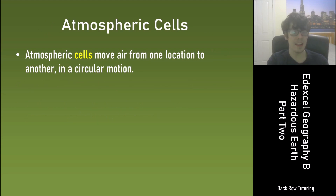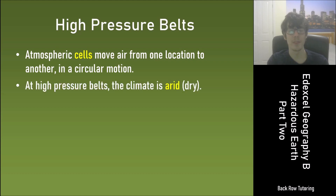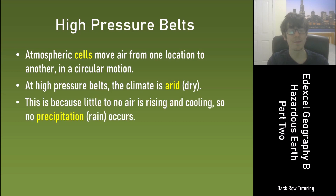Atmospheric cells move air from one location to another in a circular motion. At high pressure belts the climate is arid or dry. This is because little to no air is rising and cooling, so no precipitation or rain occurs.